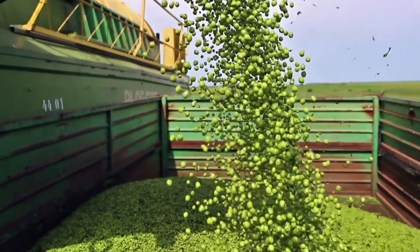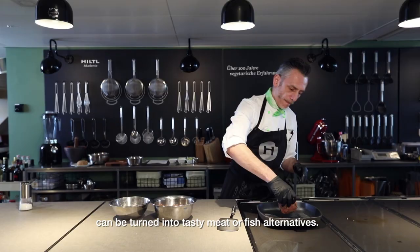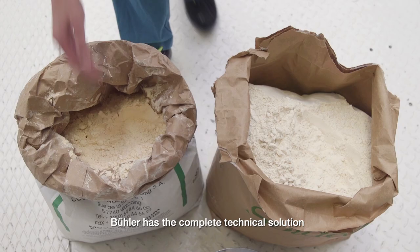Soya, pulses, oilseeds, upcycled side streams like brewers spent grains, microalgae, and future proteins from bioreactors can be turned into tasty meat or fish alternatives.